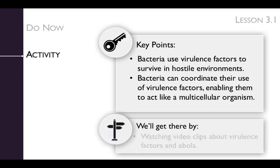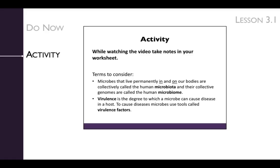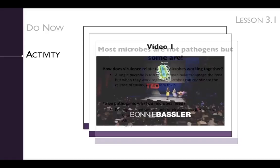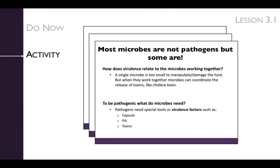We'll get there by watching two video clips about virulence factors and Ebola. The first video clip is a TED Talk with Bonnie Bassler. While watching the video clip, have your students take notes in their worksheets. Bonnie's talk focuses on how communities of bacteria use virulence factors in coordinated responses to changes in their environment. Next, have the students relate what they have learned to how virulence factors can be used to bypass host immune barriers.